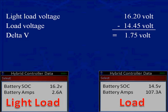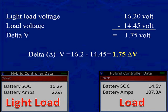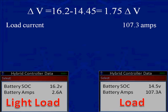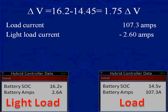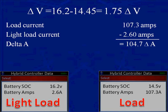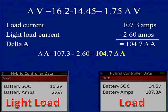Delta voltage: light load voltage of 16.2 minus load voltage of 14.45 equals 1.75 delta volts. For current: loaded current is 107.3 amps and light load current is 2.6 amps. Take 2.6 away from 107.3 and we get 104.7 delta amps.